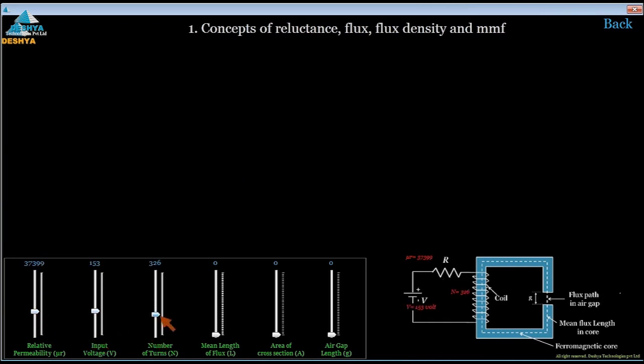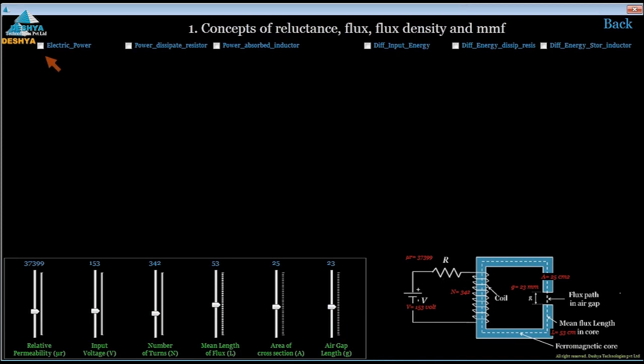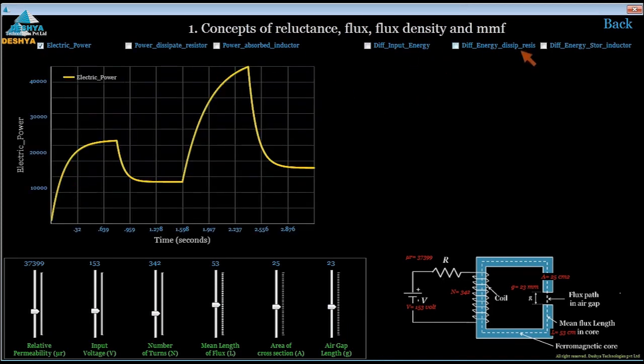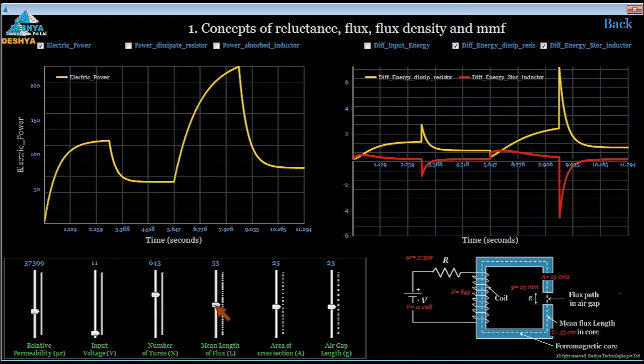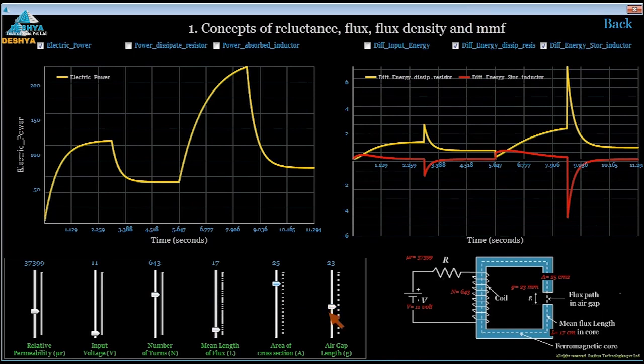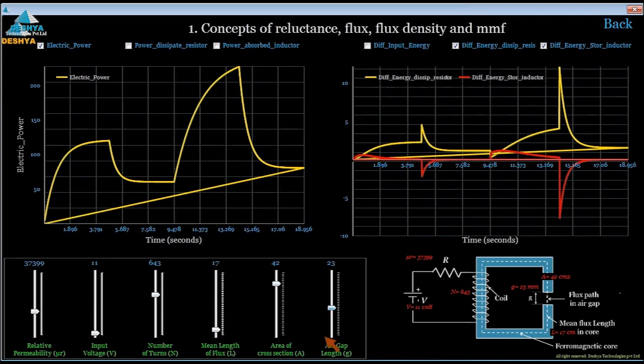It allows the user to change the input values and immediately see its effect on the output. The input values can be changed using the slider bars. As the input is changed, its effect on the output curves can be seen immediately. It is possible to see multiple output curves on the same graph and compare the results.